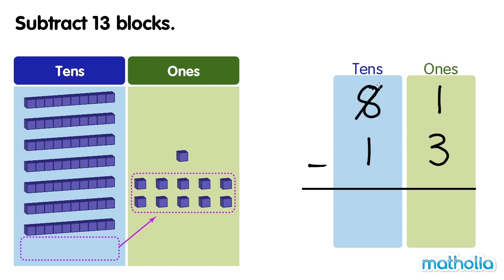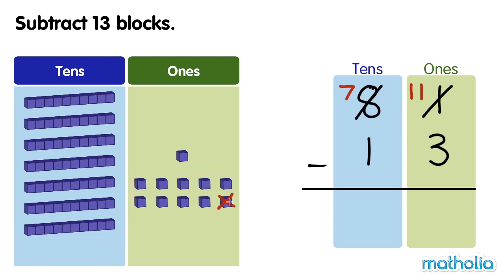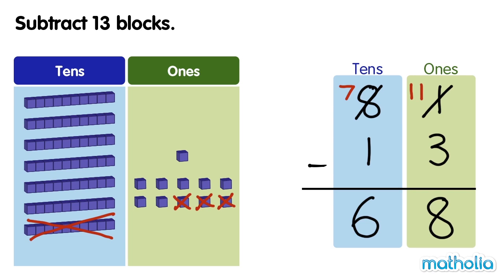Now we have 7 tens and 11 ones. Now we can subtract the ones. 11 ones minus 3 ones equals 8 ones. Next we subtract the tens. 7 tens minus 1 ten equals 6 tens. There are 68 blocks left. 81 minus 13 equals 68.